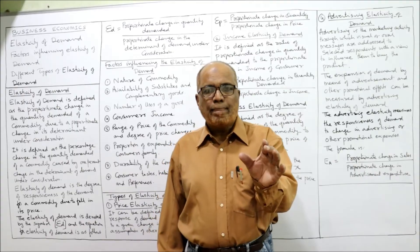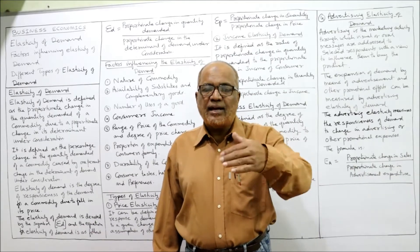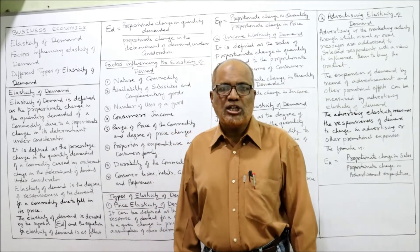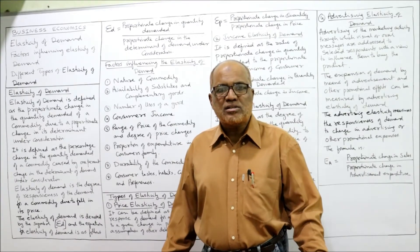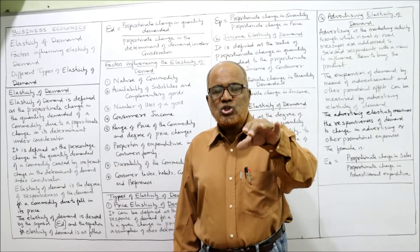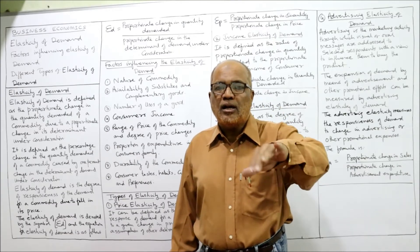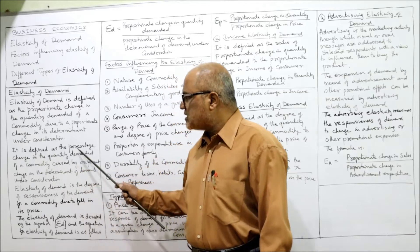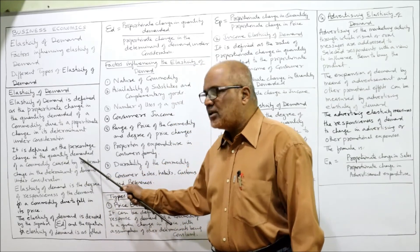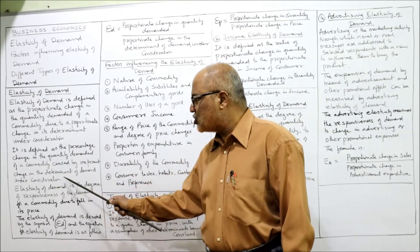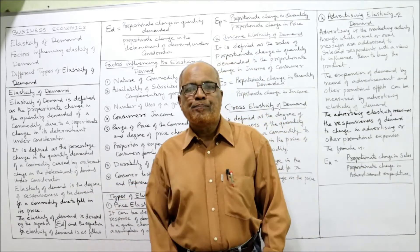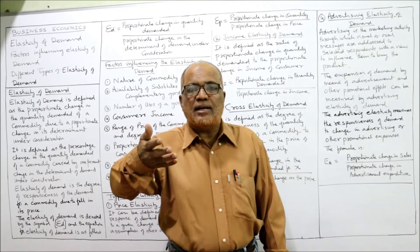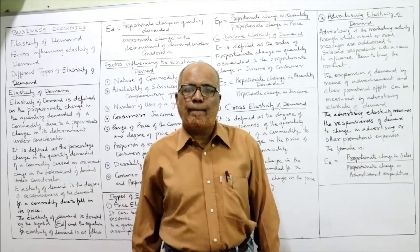If there is a slight change in a determinant, there is a corresponding change in the demand of the commodity. Simply put, elasticity of demand shows the proportionate change in the demand of a commodity due to the proportionate change in the determinant under consideration — specifically, the percentage change in quantity demanded caused by a 1% change in the determinant.